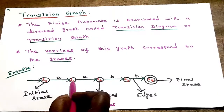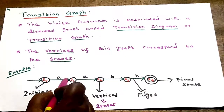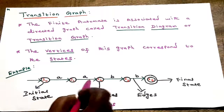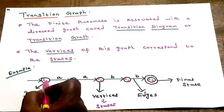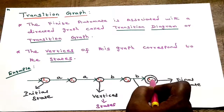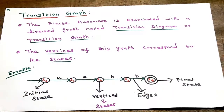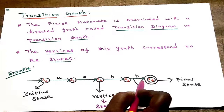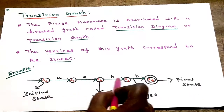Next topic: transition graph. Finite automata is associated with a directed graph, or digraph. The transition diagram is also called a transition graph. A directed graph uses arrow marks. A single circle represents a vertex or state. A double circle represents the final state. Arrow marks represent edges. The graph consists of circles for vertices or states — first is the initial state, last is the final state with a double circle, and in between are arrow mark edges.